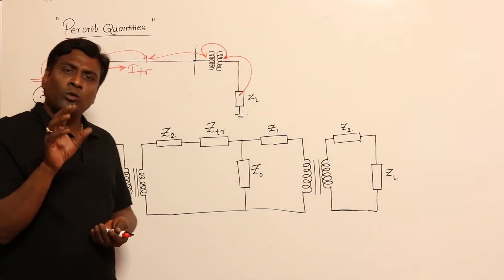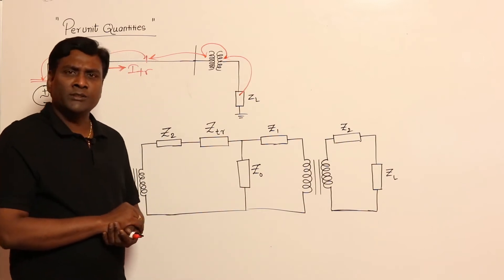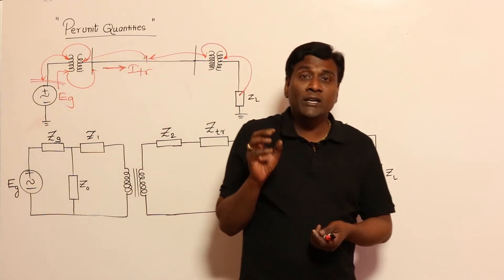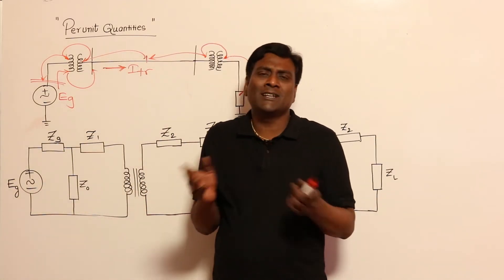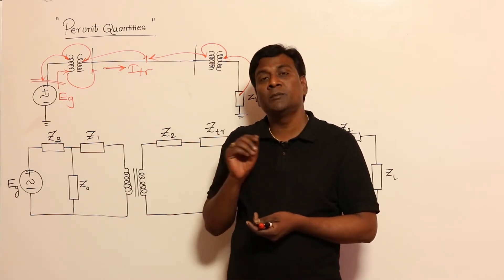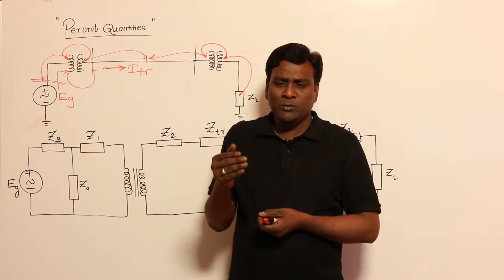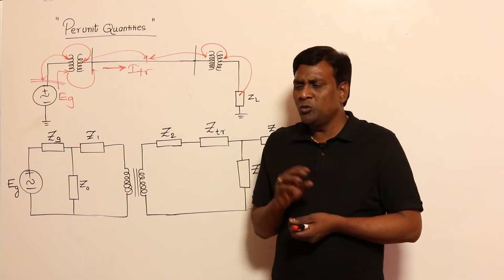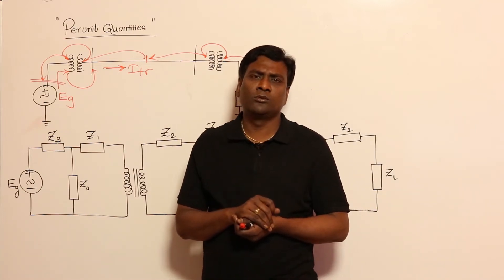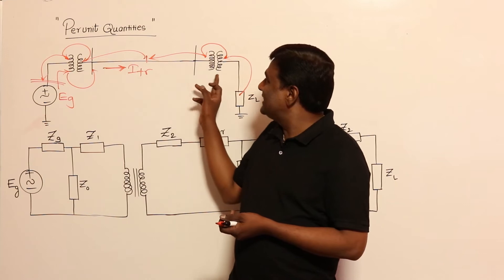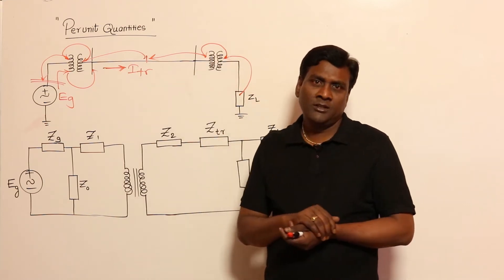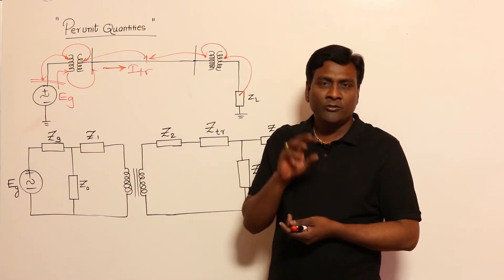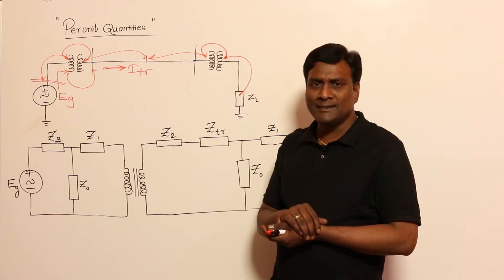Now let me explain why, in load flow studies of power systems, we do not consider the shunt branch parameters of the transformer. People say no-load currents are negligible — that is not the real reason. The real reason is that in order to gain the advantage of eliminating transformers on paper, we should not consider the shunt branch at all. This is also a good interview question.